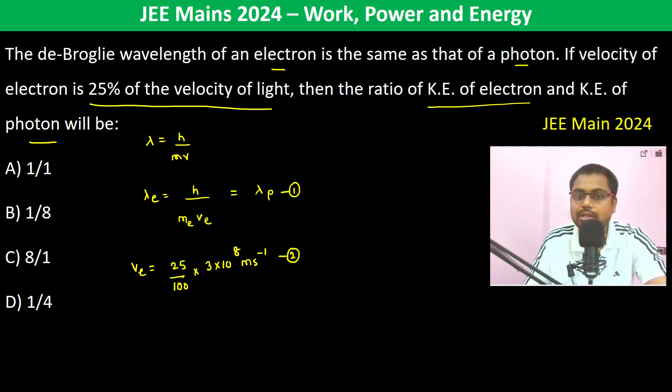We have to find out the ratio of the kinetic energy of electron and kinetic energy of photon. Kinetic energy of electron will be half m_e v_e squared divided by kinetic energy of photon which is hc by lambda.